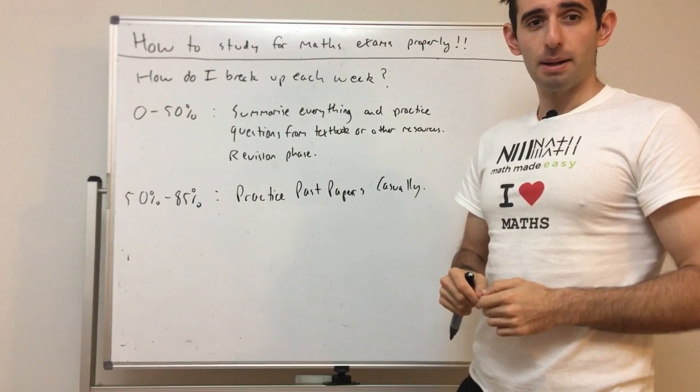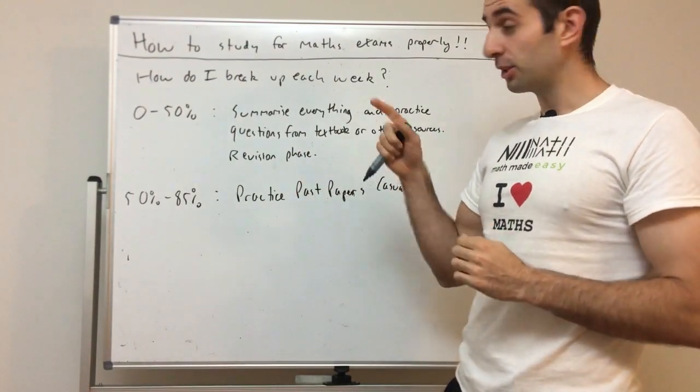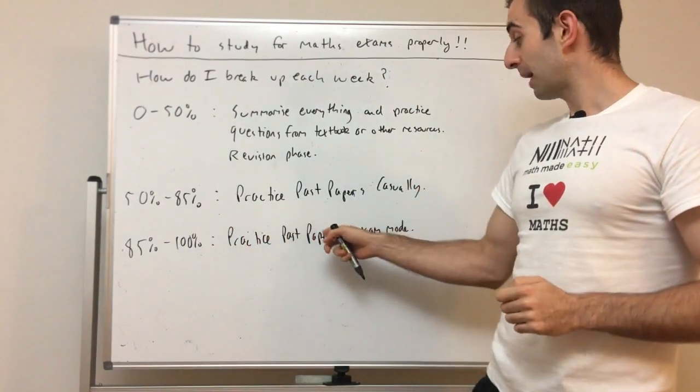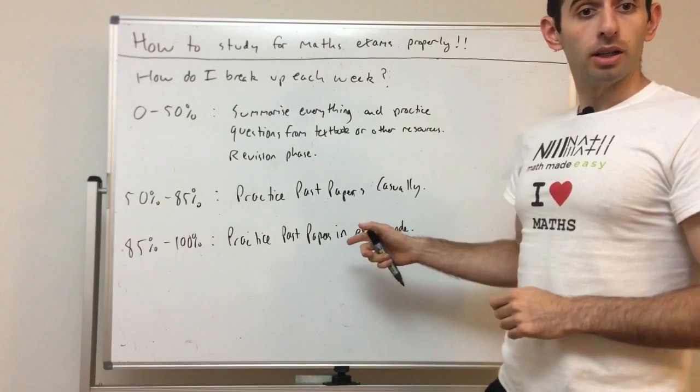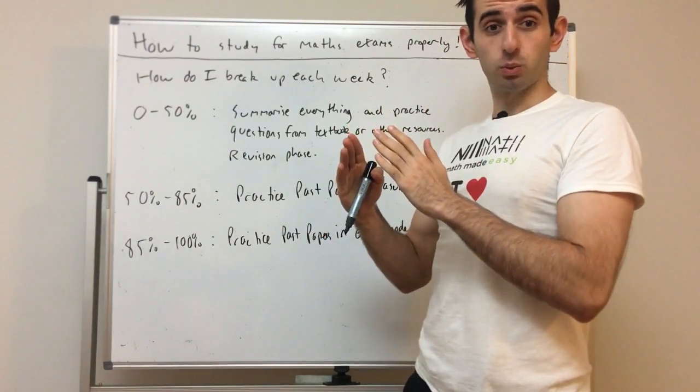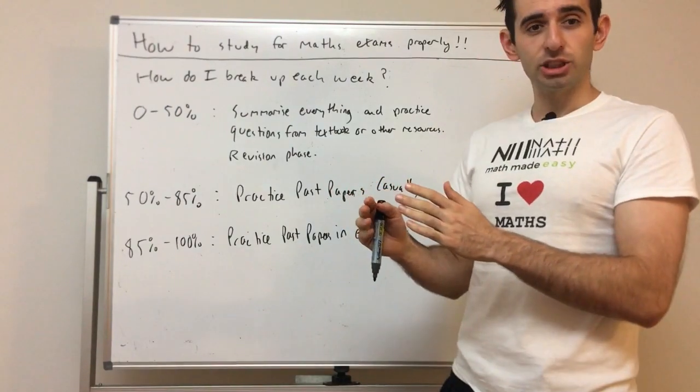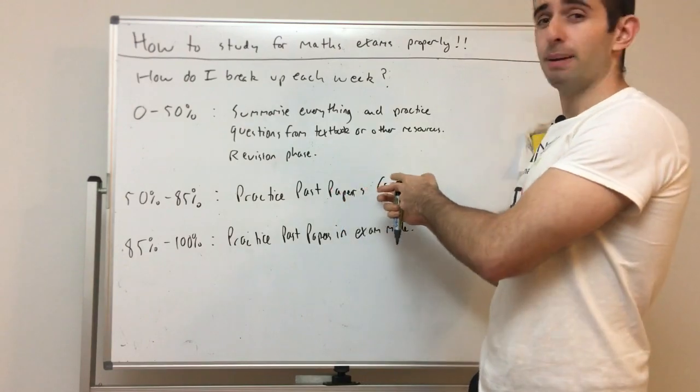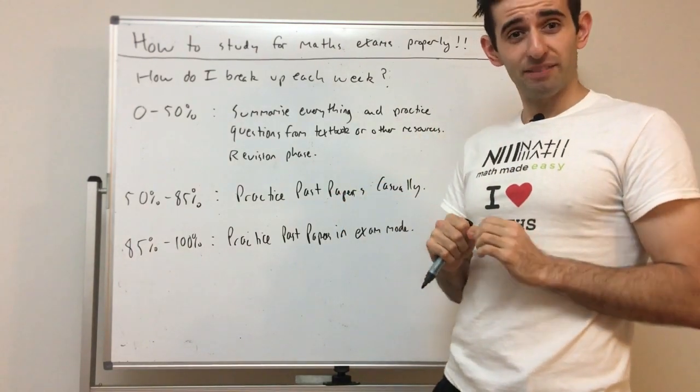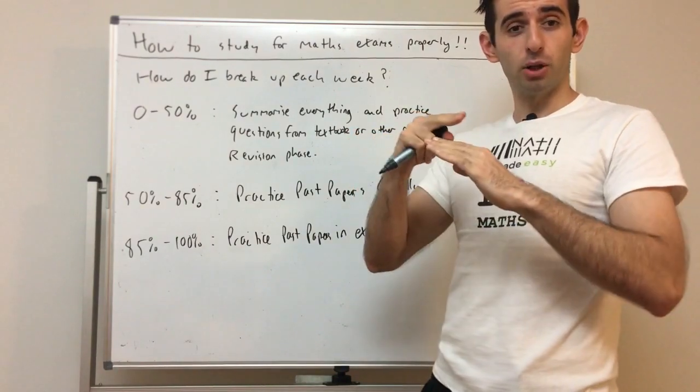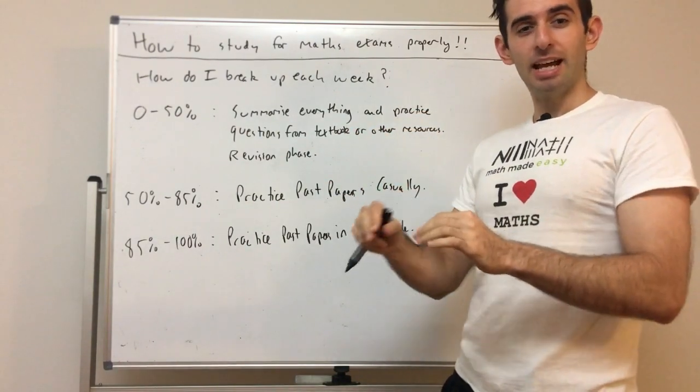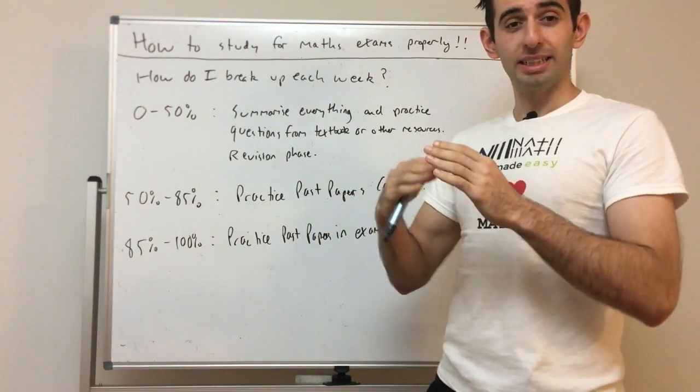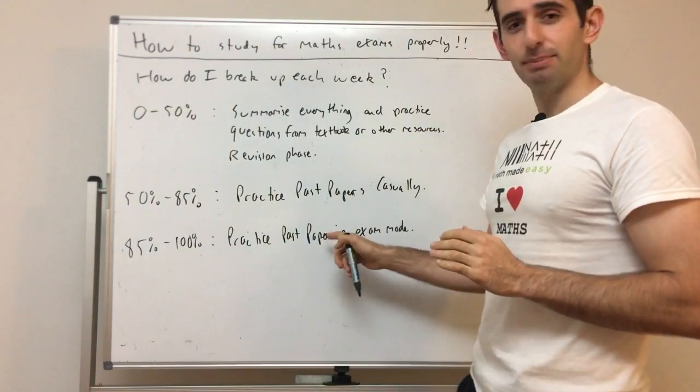The final phase - once you master this last phase, that's when you're going to do really well. Practice past papers in exam mode. The last week or so, a few days, you will not only be doing past papers, but you're going to set the exact time you have in the exam. So if it's a two hour exam, set a two hour block and do a past paper as though it's the actual exam. Only have the material that you're allowed in the exam. Spend those two hours doing the exam as though it's the actual exam.